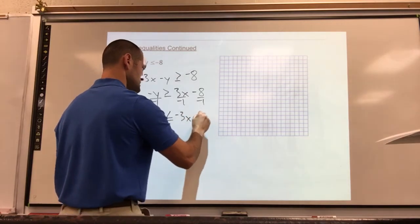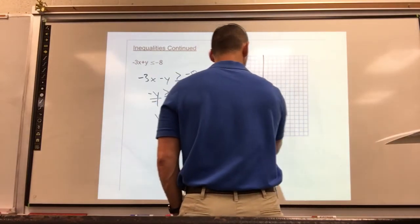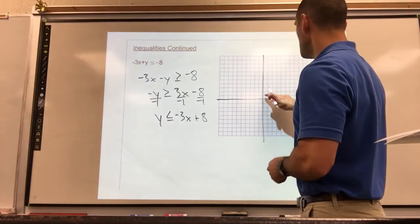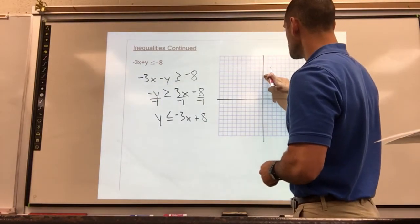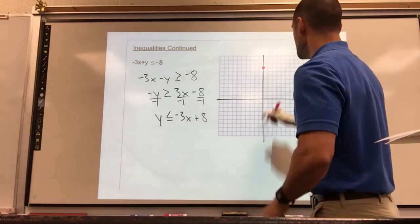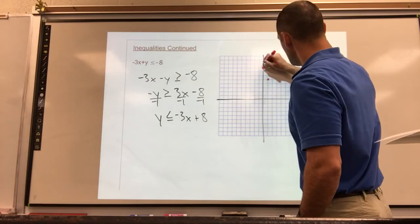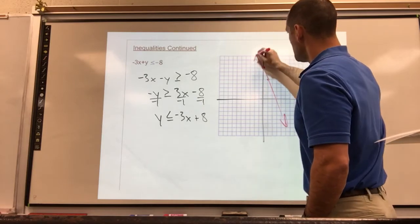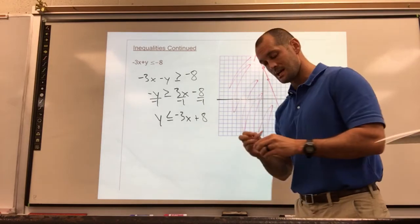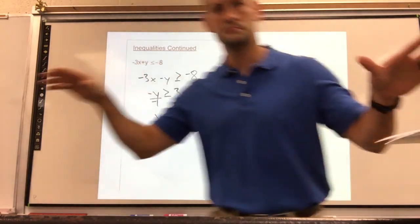Okay, so graph time. I need to start at 8, and that is my y-intercept: 1, 2, 3, 4, 5, 6, 7, 8. My counting skills are still stellar. Slope of negative 3, down 3, right 1. This is a solid line because it is equal to. I'm less than, so I am beneath the line. And that's how to graph linear inequalities. Mic drop, walk off.